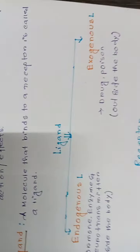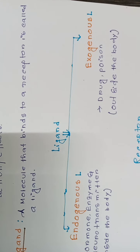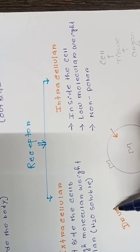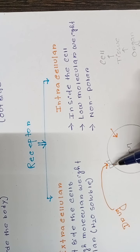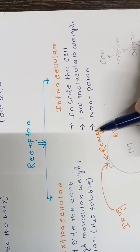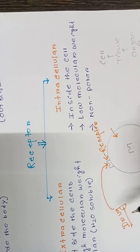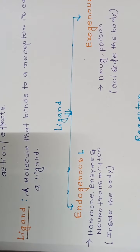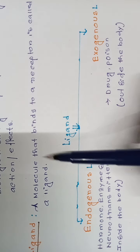Now we are focusing on ligand. What is a ligand? A ligand can be a drug — when the ligand binds to the receptor, it produces an effect. The ligand may be a drug, hormone, enzyme, or any neurotransmitter. The definition of ligand is: a molecule that binds to a receptor is called a ligand.